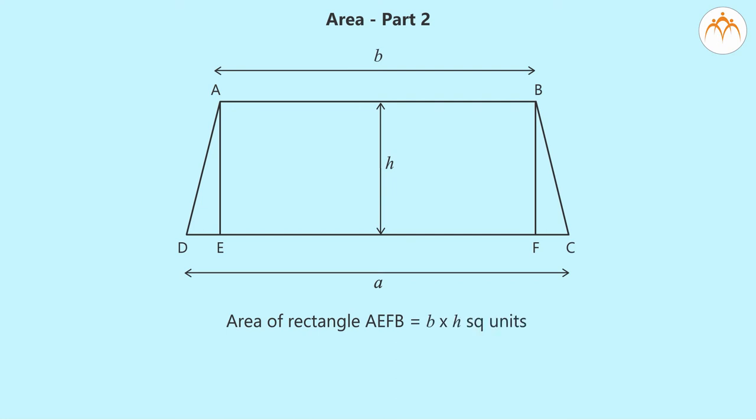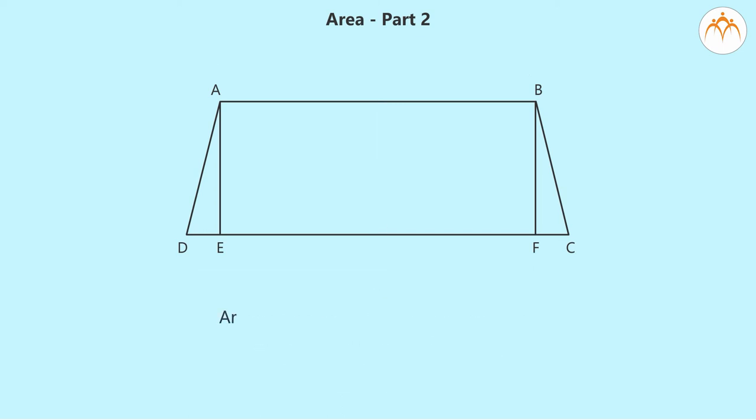The base of the triangle formed by matching the two triangles is A minus B. The area is 1/2 times (A minus B) times H. Area of the trapezium equals BH plus 1/2 times (A minus B) times H.